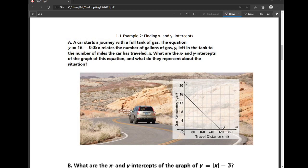So, we have a car that's starting a journey, apparently, with a full tank of gas. And they give us the equation that talks about the number of gallons of gas, which is on their y-axis. And then they're talking about the distance of travel on the x-axis. And they want to know what those intercepts are.